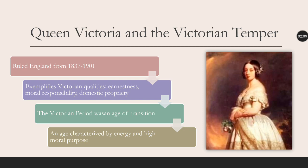The amplification of the Victorian qualities — earnestness, moral responsibility, and domestic propriety — defined the era. The Victorian period was an age of transition. It was the move of England from one phase into the other, an age characterized by energy and high moral purpose.